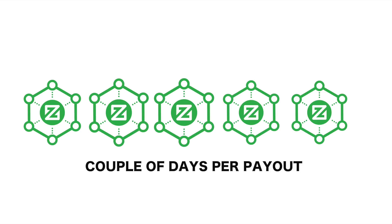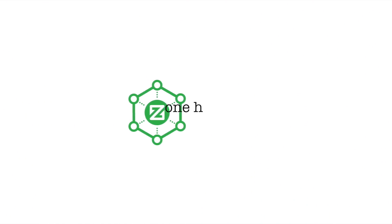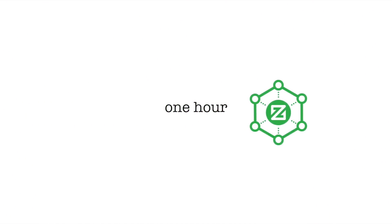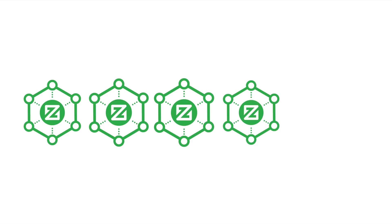Depending on how many nodes there are, it might take a couple of days. However, if it is your first time, the payout usually takes a little bit longer. What happens if my Znode goes offline? Do I lose my payout? There is a grace period of about an hour, and if you're not online within that hour, you will lose your place in the queue and you have to queue up all over again.